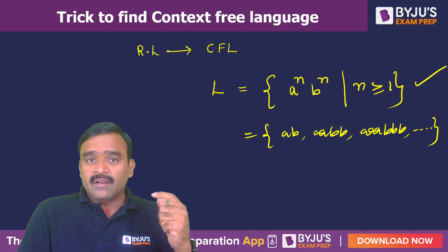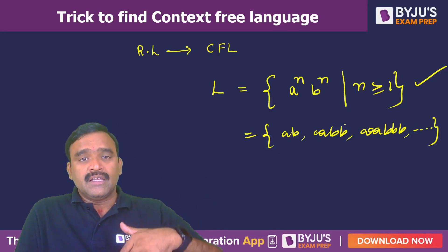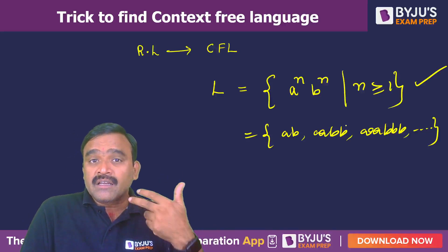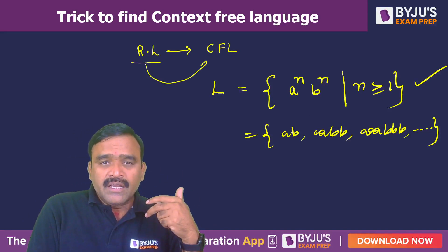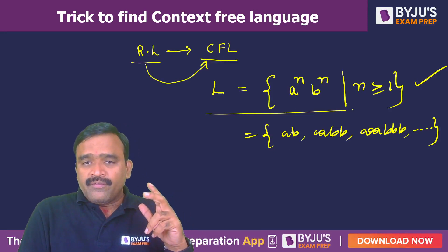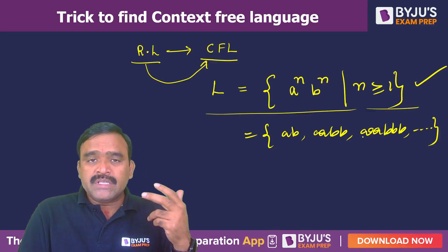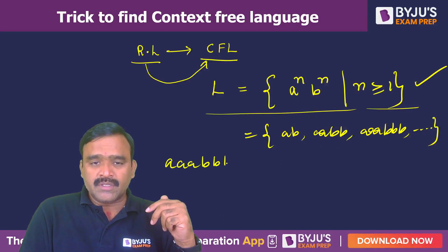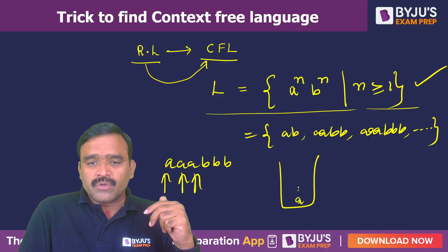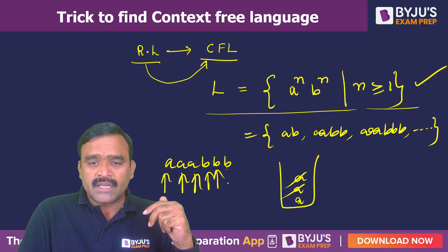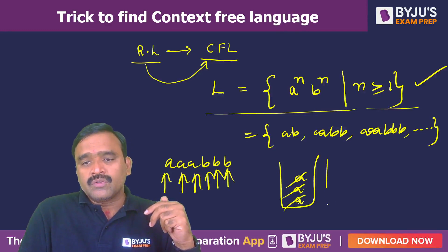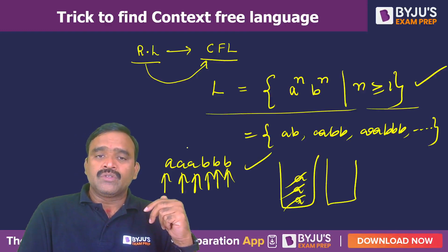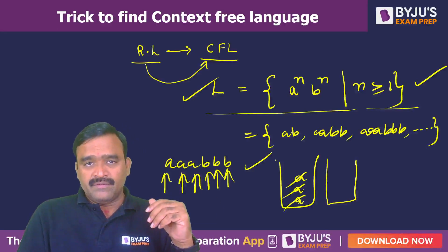This language is not regular because there is a dependency. When it is not regular, we check whether it is stack recognizable or not. For a language to be context-free, it should be stack recognizable — we should recognize the sentence through empty stack. For example, with three a's followed by three b's, we can push the a's into the stack, and for each b, we pop an a. Through empty stack, we can recognize the sentence, so this language is a context-free language.